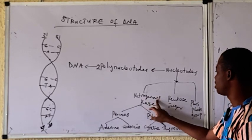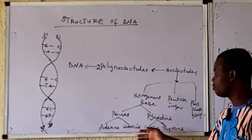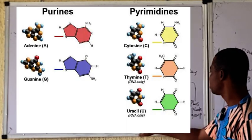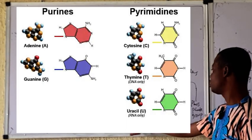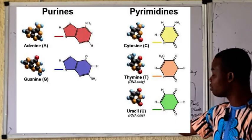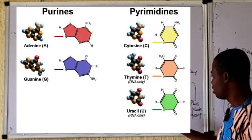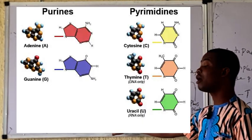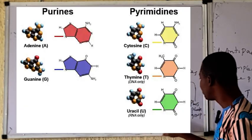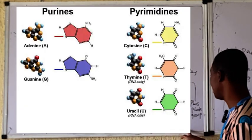Now let's take a look at the nitrogenous base. The nitrogenous base is of two types: we have the purines and the pyrimidines. As the pictures of purines and pyrimidines are being displayed — purines are of two types: we have adenine and guanine. And for the pyrimidines, we have cytosine and thymine.